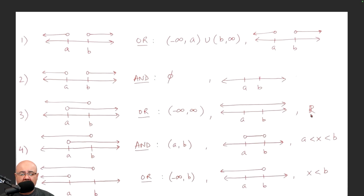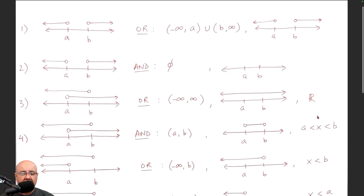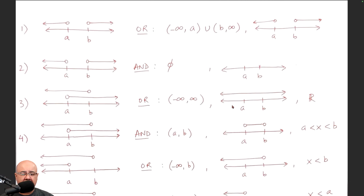You can also represent this with the script letter R to indicate all real numbers. If I ask for an interval, this is what you must give me. If I ask for the graph, this is what you must give me. In some cases, students were typing this in and Delta Math was marking it correct. For the interval, this is the correct notation; for the graph, this is the correct graph.